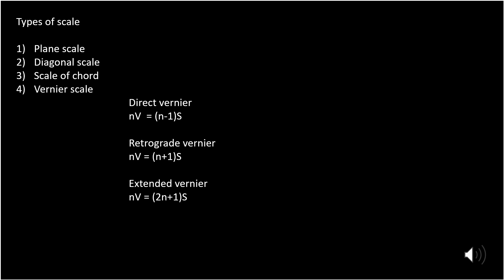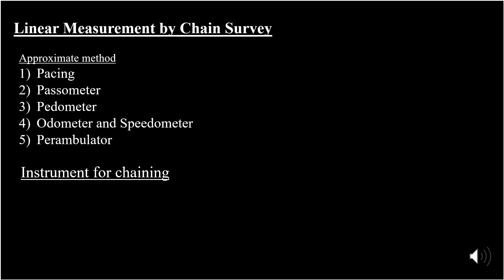This is the scale part. Next is linear measurements. Linear measurements are done by two methods: first by chain survey and second by using tape. In chain survey, we can measure the horizontal distance by chain, and we can approximately calculate that distance by a few methods.